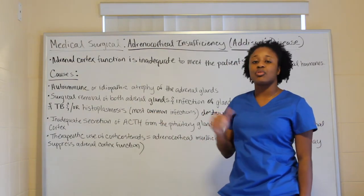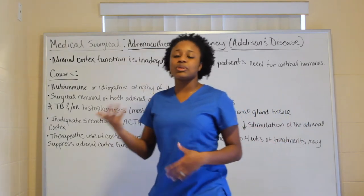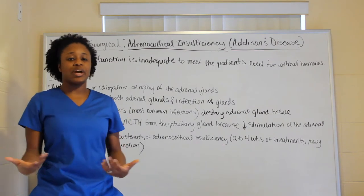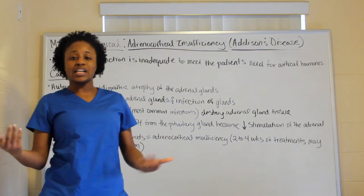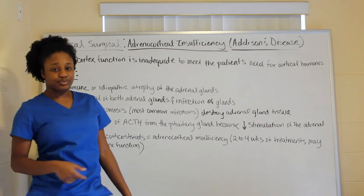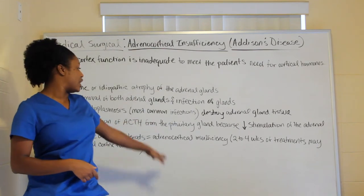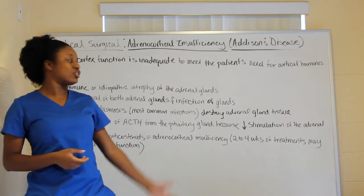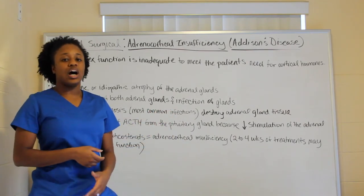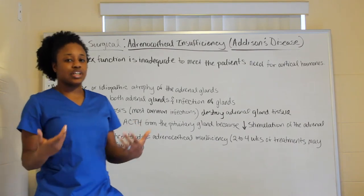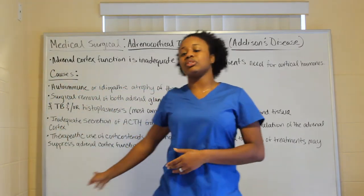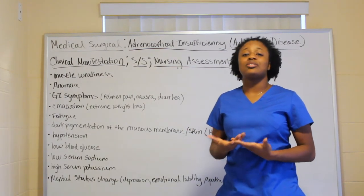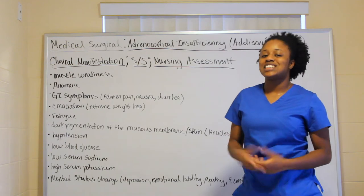Addison's disease can also be caused by therapeutic use of corticosteroids. Patients may use corticosteroids for their anti-inflammatory properties, but this affects the adrenal glands. You can see adrenal cortical insufficiency within two to four weeks of corticosteroid treatment — a suppression of the adrenal gland itself.